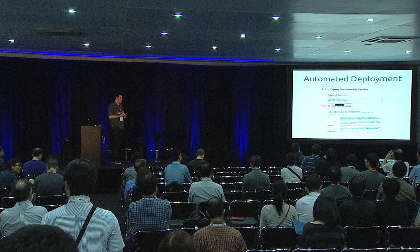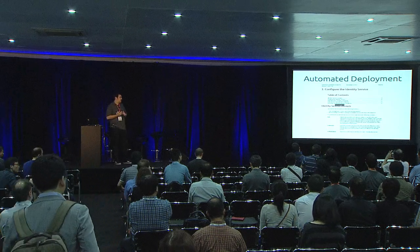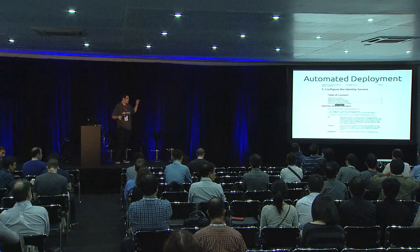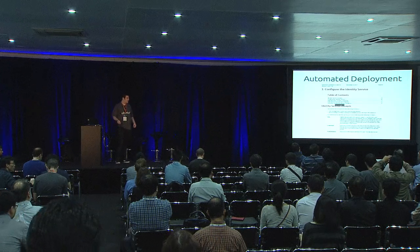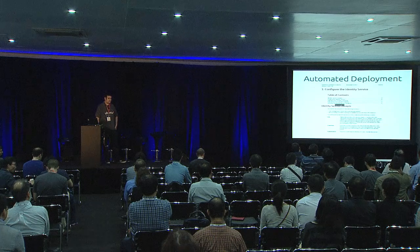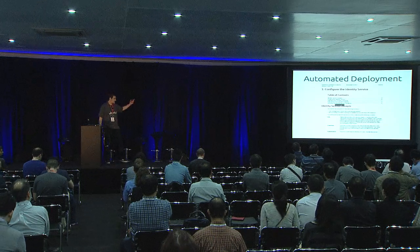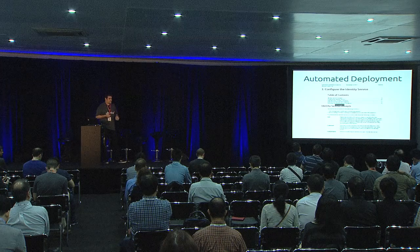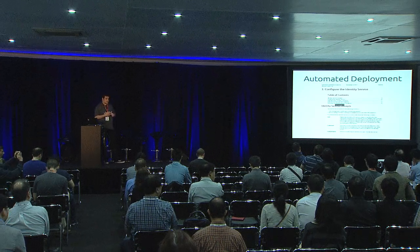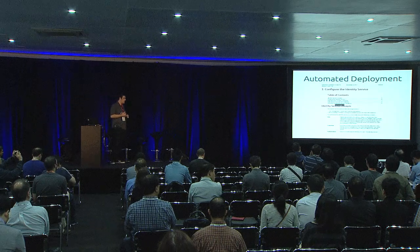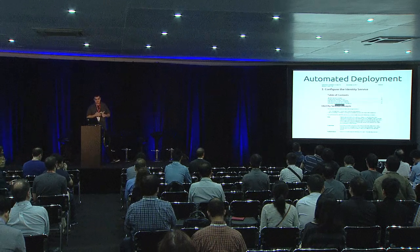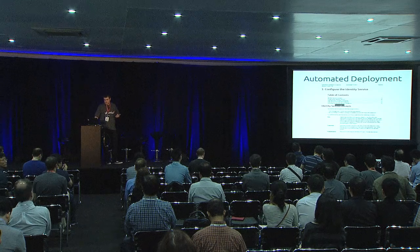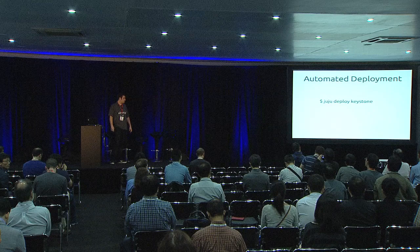What does a charm do? How does it differ from configuration management and more traditional service orchestration? One of the points of a charm is to condense everything you would get out of a document or a how-to into something that's easily reusable and easy to distribute. Here's a snippet of the official OpenStack Havana documentation for configuring and deploying the Keystone identity service — about five or six pages. If anyone's configured Keystone manually, you know it's an awkward procedure with lots of URLs, UIDs, and credential sets to manage.